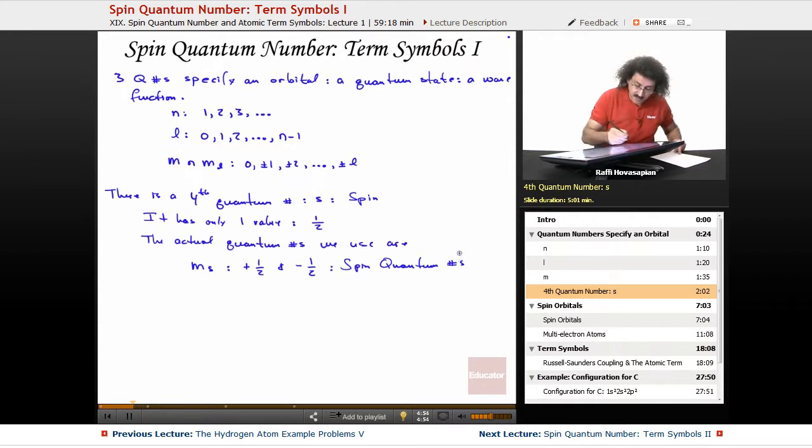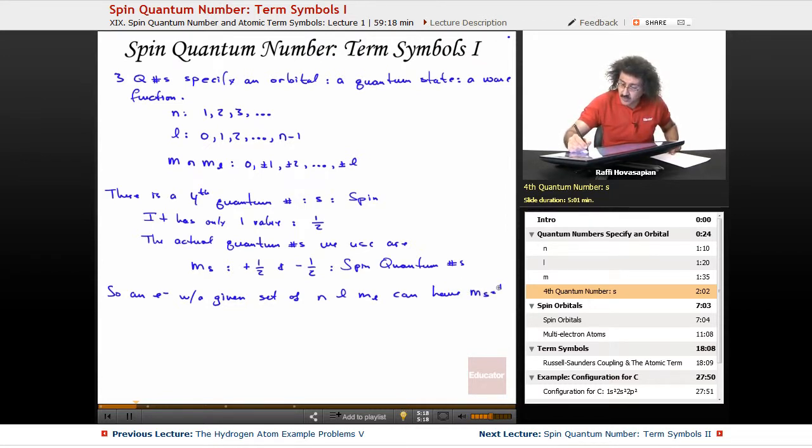So, an electron with a given set of n, l, and m sub l, can have m sub s equals plus one-half, which we call up-spin, or m sub s equals minus one-half, which we call down-spin. That's it.